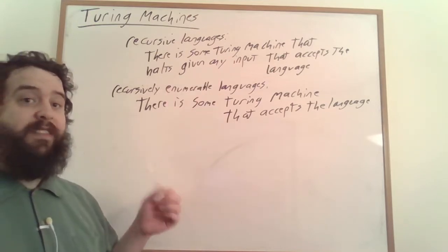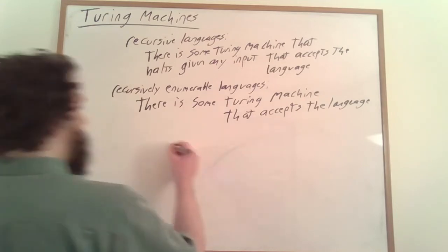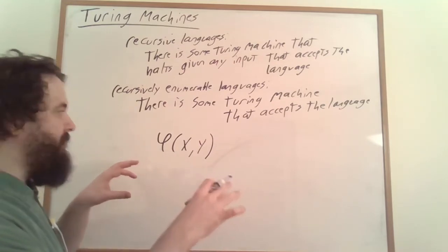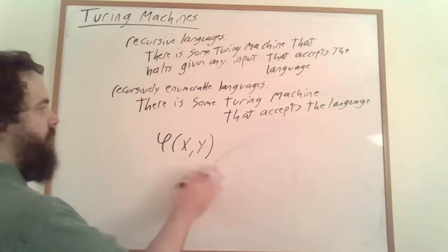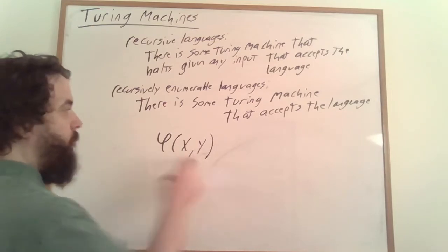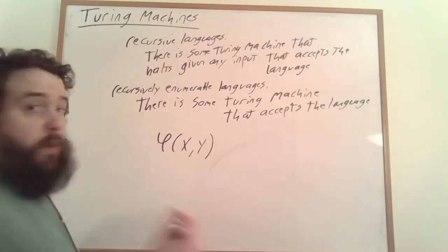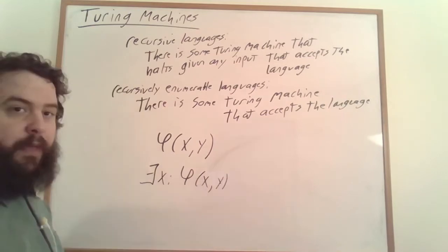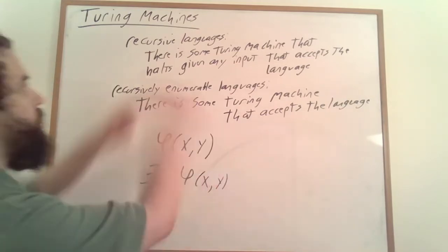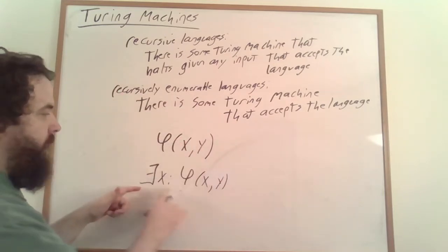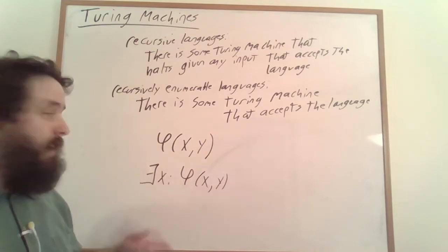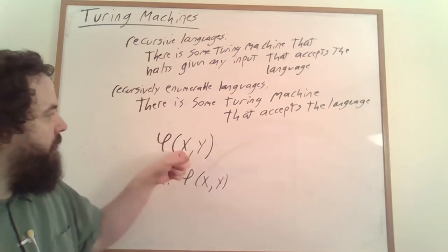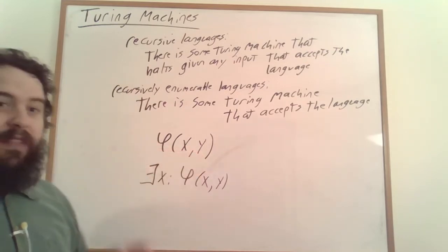The other problem with recursive languages is that they're not closed under projection. That is, if we have a Turing machine that accepts pairs — you can encode them separated by a comma — and we have a particular Turing machine that given two words x and y determines whether or not they have some property, then we would also like to build a Turing machine that determines if there exists an x such that phi of x, y. This is a kind of projection, and it's really important when we're proving an equivalence with a language for showing things work with both the existential and the universal quantifier.